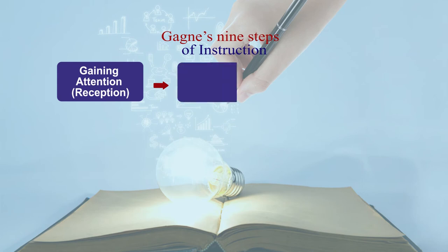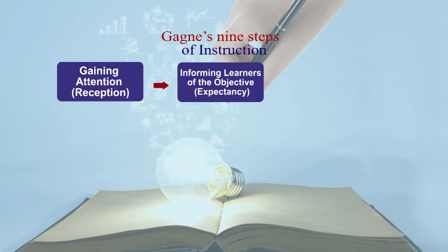Then the second step is you should inform your learners about the objectives — what you are expecting from them. This is called expectancy. What they are expected to achieve, what they are expected to do at the end of the instruction — that is the second step in Gagne's model.